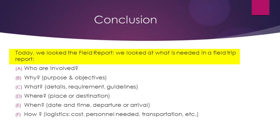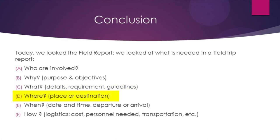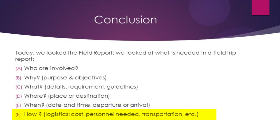Today we've looked at the field trip report and what is needed in it. These are things like who are involved; why, which talks about our purpose and our objectives; what, which speaks to details and requirements; where, which speaks to the place or the destination; when, which talks about date and time, departure or arrival; and how, encompassing logistics, costs, personnel needed, transportation, etc.